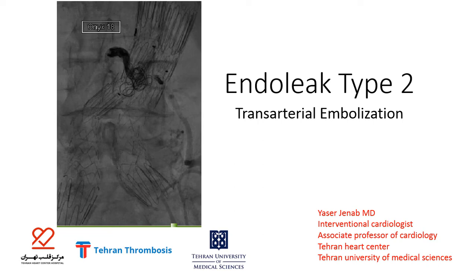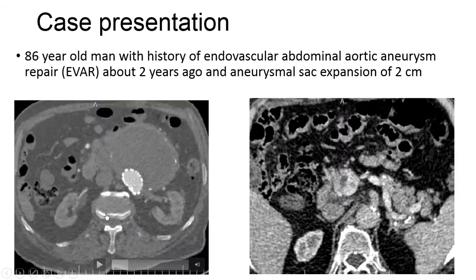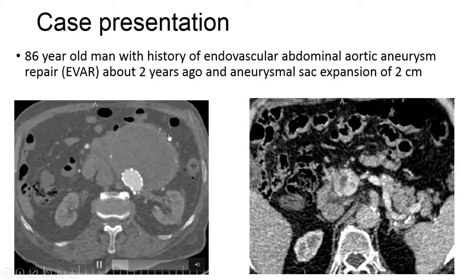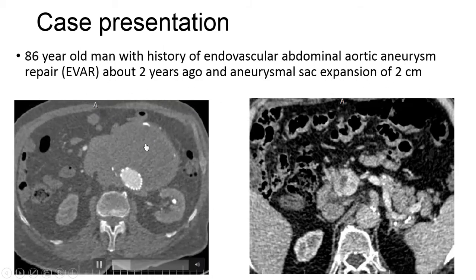Hello, this is Diaser Janop, Interventional Cardiologist from Teron Heart Center, presenting the case: Endoleak Type 2 Transarterial Embolization. Our case is an 86-year-old man with a history of endovascular abdominal aortic aneurysm repair about two years ago and aneurysmal sac expansion of two centimeters.